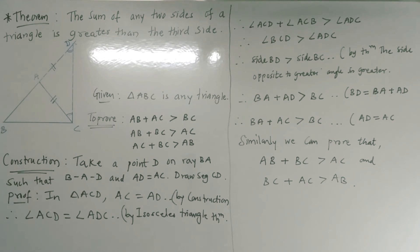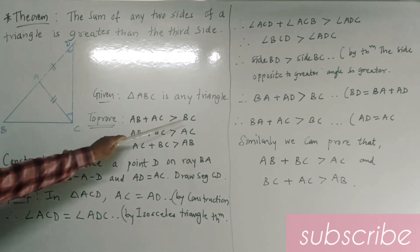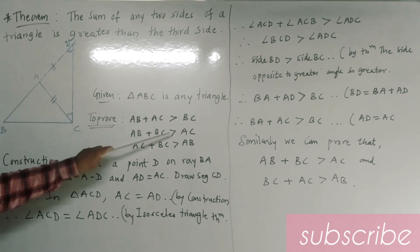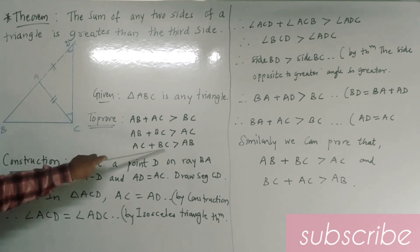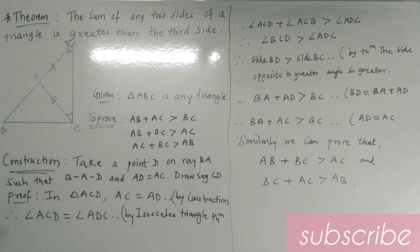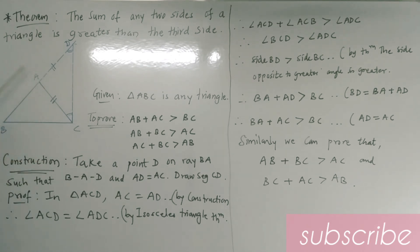The third theorem: the sum of any two sides of a triangle is greater than the third side. Let us consider triangle ABC. We have to prove that AB plus AC is greater than BC, or AB plus BC is greater than AC, or AC plus BC is greater than AB. Construction: take a point D on ray BA extended such that B, A, D are collinear and AD is equal to AC.